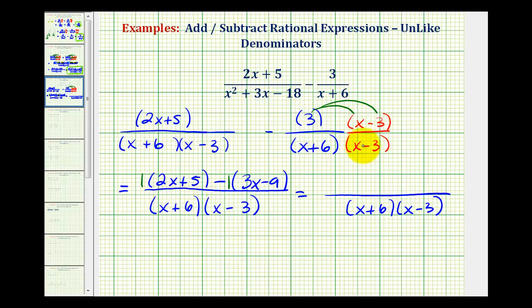Again, here we can just drop the parentheses or distribute 1, so this is going to be 2x plus 5. But here we're distributing a negative 1 because of the subtraction, so it's going to be minus 3x. And then it's negative 1 times negative 9, so it's going to be plus 9.